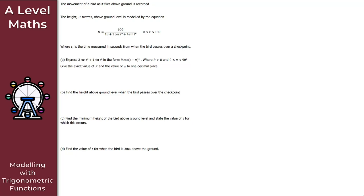For part B, we need to find the height above ground level when the bird passes over the checkpoint. The bird passes over the checkpoint when T = 0, so we substitute T = 0 into the original equation. We get H = 600 / (18 + 3cos0 + 4sin0).